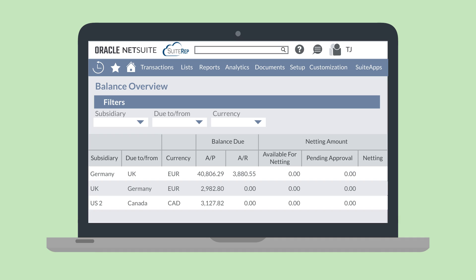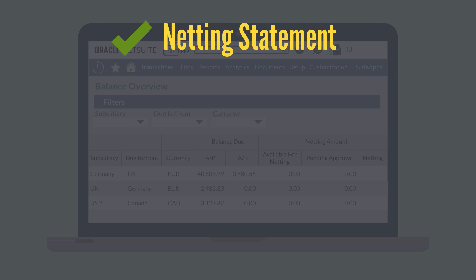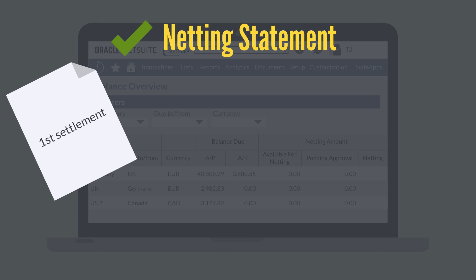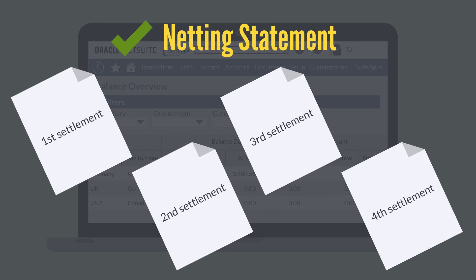The netting statement can be deleted if necessary, as long as the accounting period is still open, or it can be approved. Once the netting statement has been approved, NetSuite will automatically create four netting settlements — two settlements to close out AP and AR for one subsidiary, and two settlements to close out AP and AR for another subsidiary.